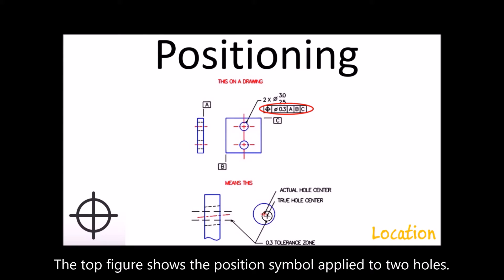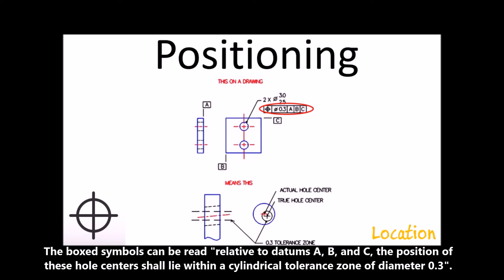The top figure shows the position symbol applied to two holes. The boxed symbols can be read relative to datums A, B, and C. The positions of these hole centers shall lie within a cylindrical tolerance zone of diameter 0.3 units.